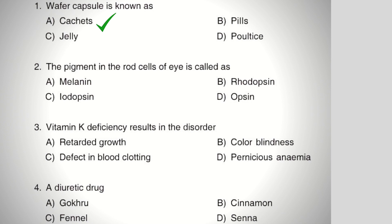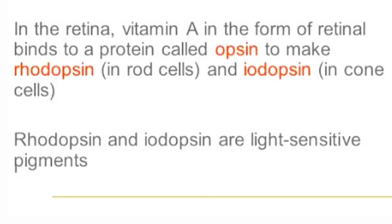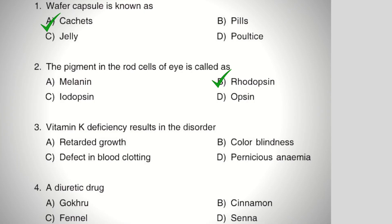Next question: the pigment in the rod cells of the eye is called — Option A: melanin, Option B: rhodopsin, Option C: iodopsin, Option D: opsin. The right answer is Option B, rhodopsin. Melanin is a pigment which gives color to skin and hair. In the retina we have two pigments: rhodopsin, found in rod cells, and iodopsin, found in cone cells. Opsin is a protein which binds to vitamin A in the form of retinal to make rhodopsin and iodopsin.